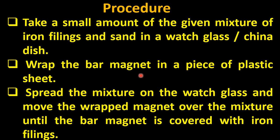Spread the mixture on the watch glass and move the wrapped magnet over the mixture until the bar magnet is covered with iron filings. When we move our bar magnet over the mixture, what happens is that all the iron filings get attracted to the magnet.